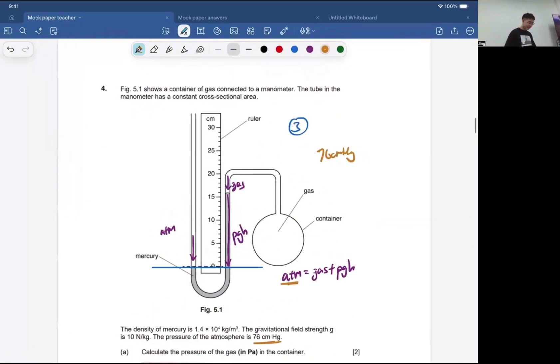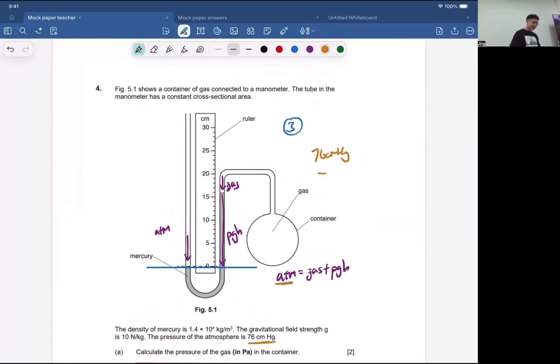How to convert CMHG into Pascals? CMHG means what? Means CM of Mercury. Let's say I have... inside here, I got Mercury.